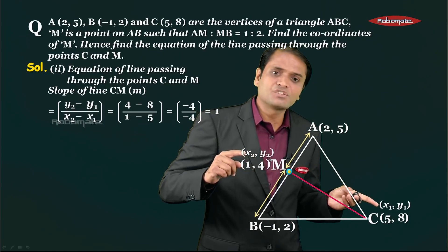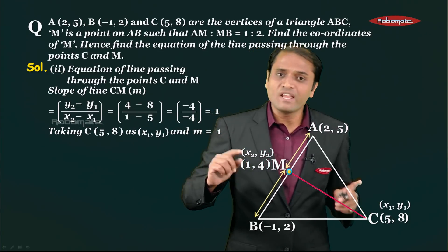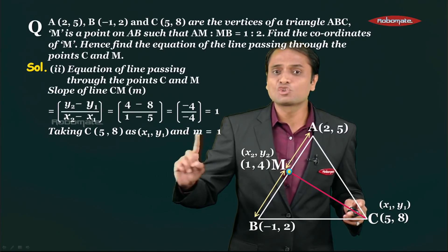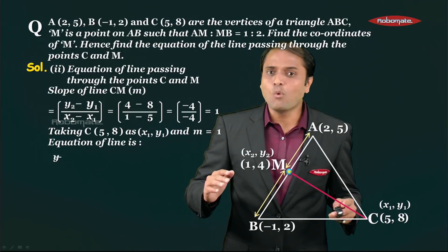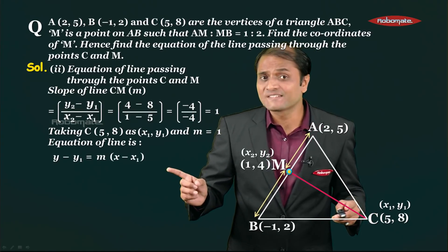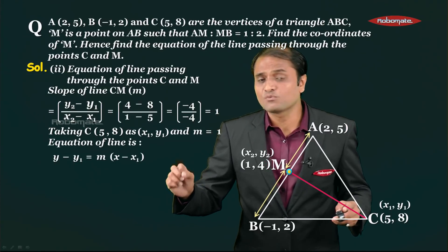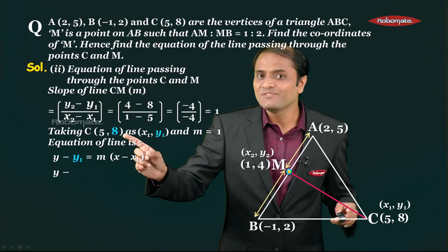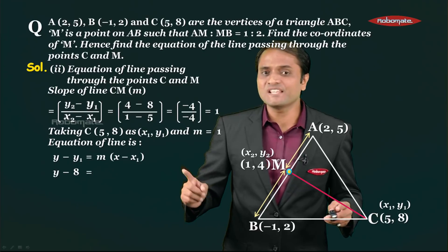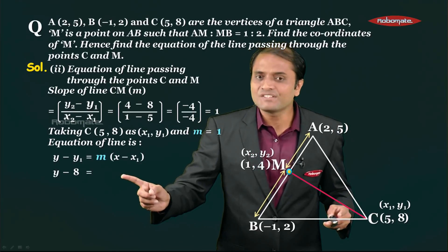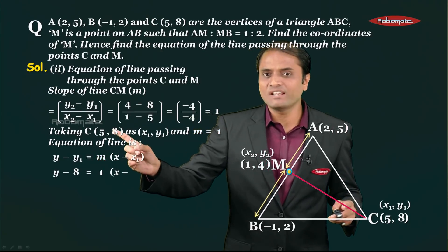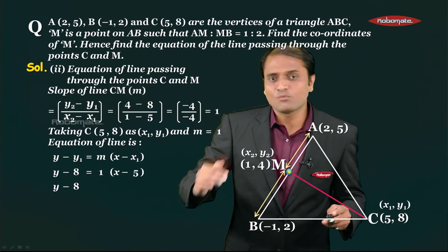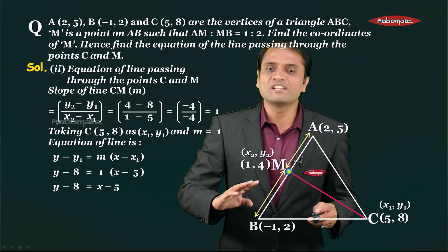We also have the coordinates of point C, which we treat as x1,y1 = (5,8). With one point and the slope known, we use the point-slope form: y - y1 = m(x - x1). Substituting: y - 8 = 1·(x - 5), which simplifies to y - 8 = x - 5.